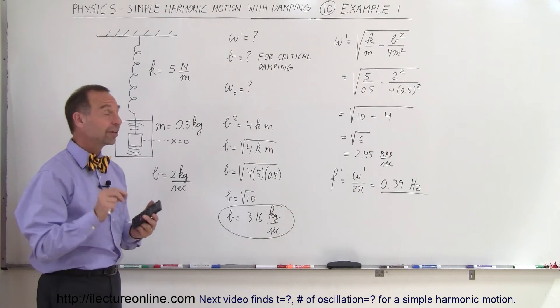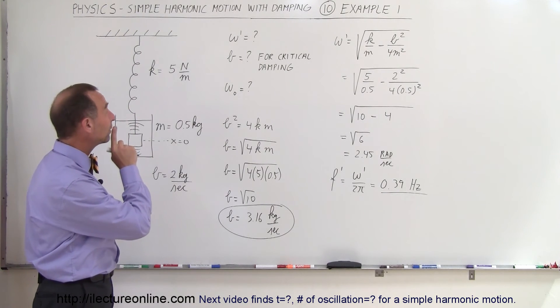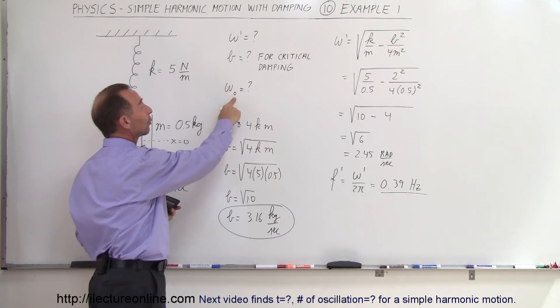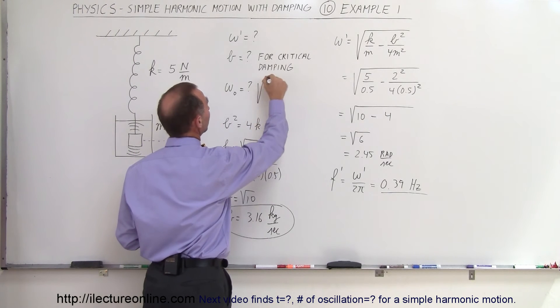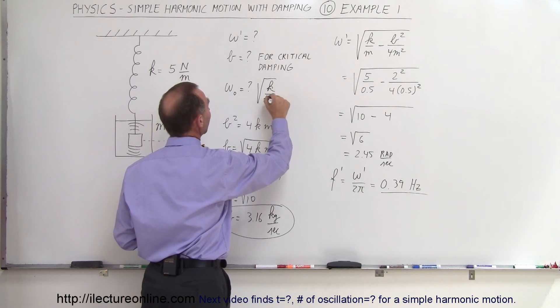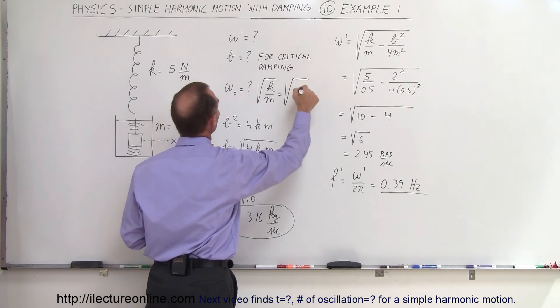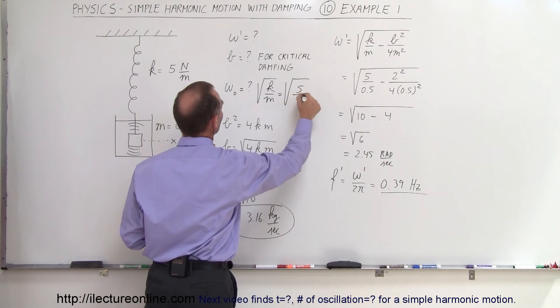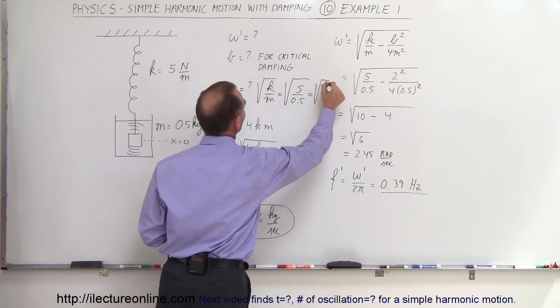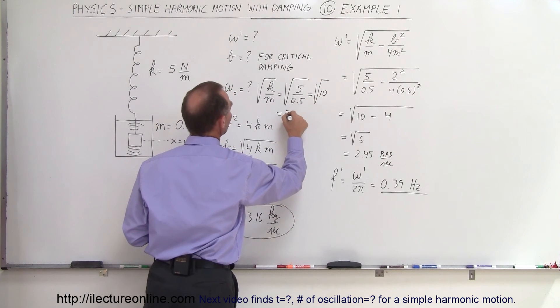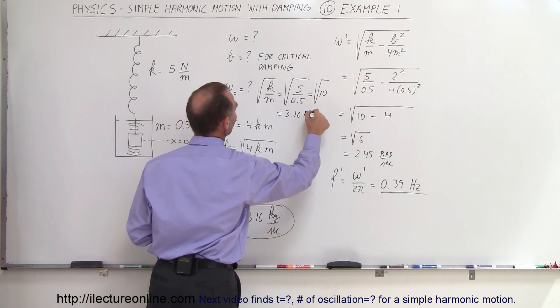The last thing we want to do is figure out what the original frequency would be, and of course the original frequency would be the square root of k over m, if there was no damping effect at all, which is equal to the square root of k, which is 5, divided by m, which is 0.5, which is equal to the square root of 10, which is equal to 3.16 radians per second.